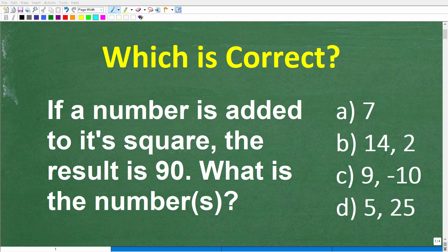Let's see if you can figure out how to solve this interesting math word problem. Let me go ahead and read the problem. It is as follows: If a number is added to its square, the result is 90. What is the number or numbers?